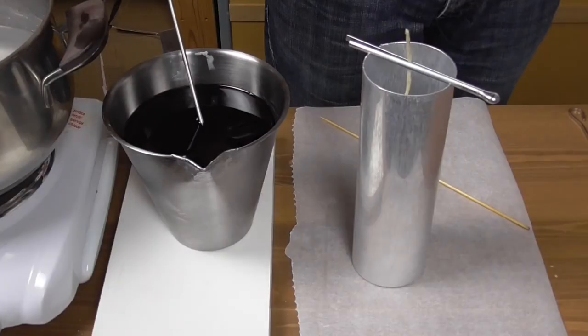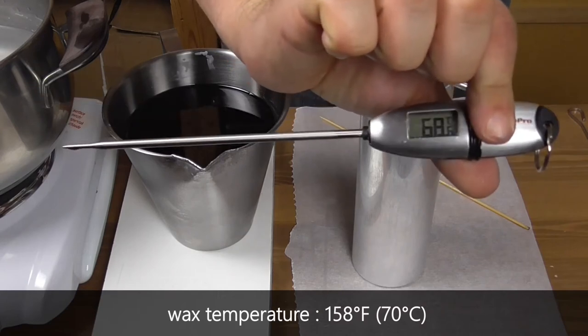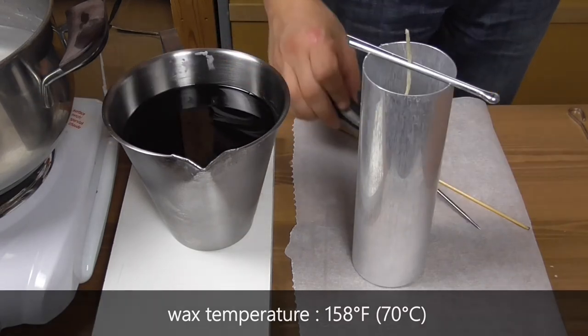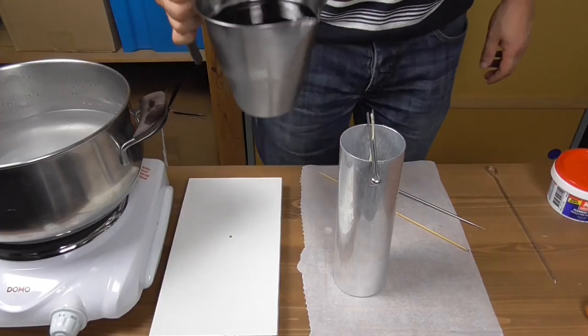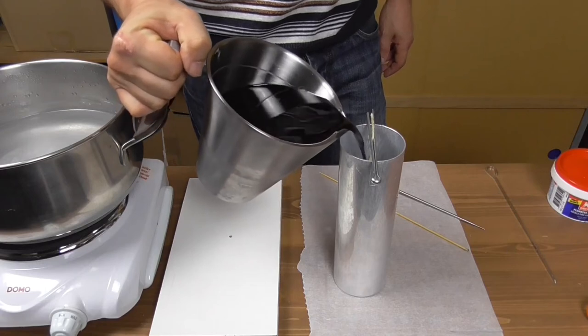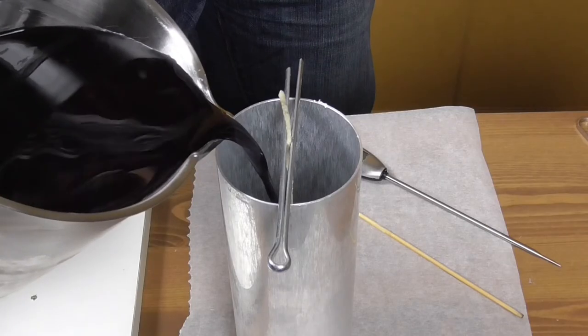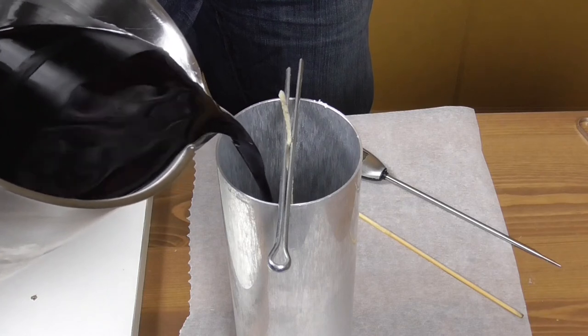Check the wax temperature. 70 degrees is the perfect pouring temperature. Pour slowly and in a constant flow to avoid creating air bubbles in the mold. Fill the mold to the brim or nearly so.